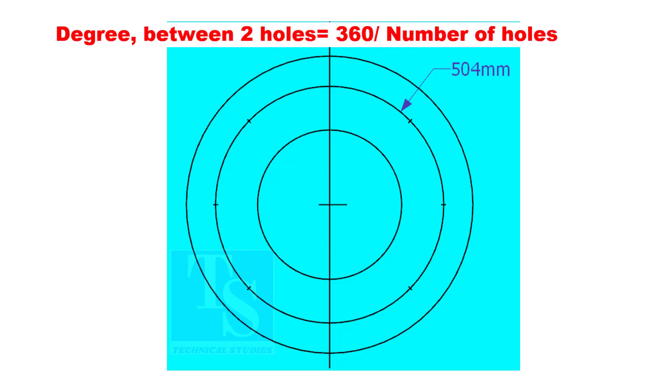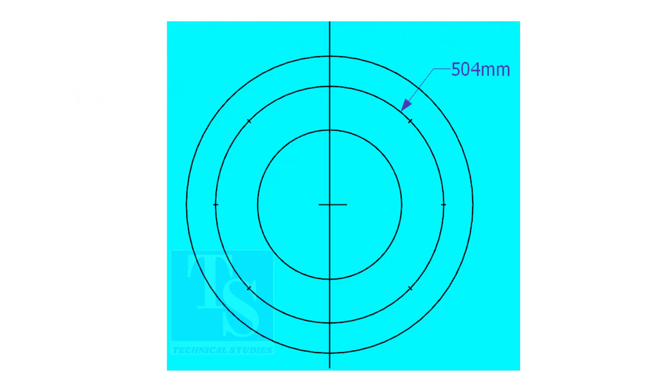If you divide 360 by the number of holes, you will get the angle between two holes. Chord length equals sine 45, divided by 2, multiplied by PCD.